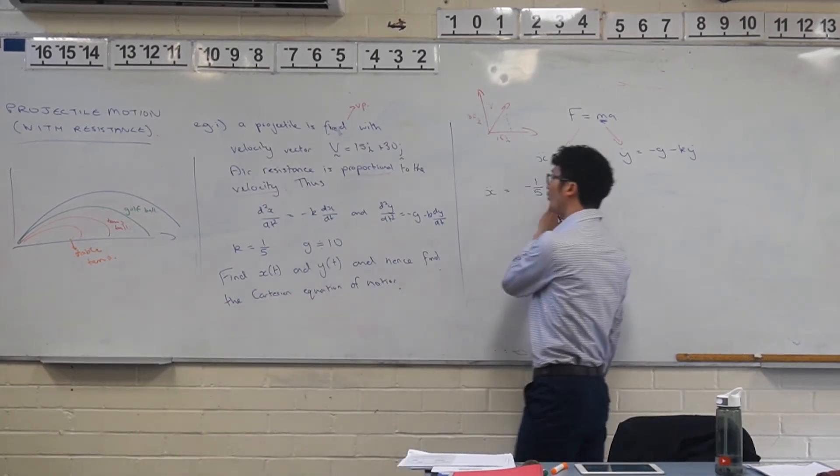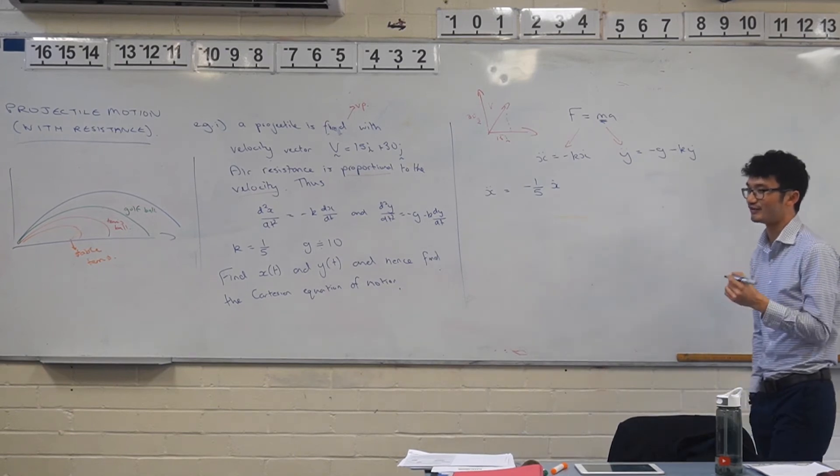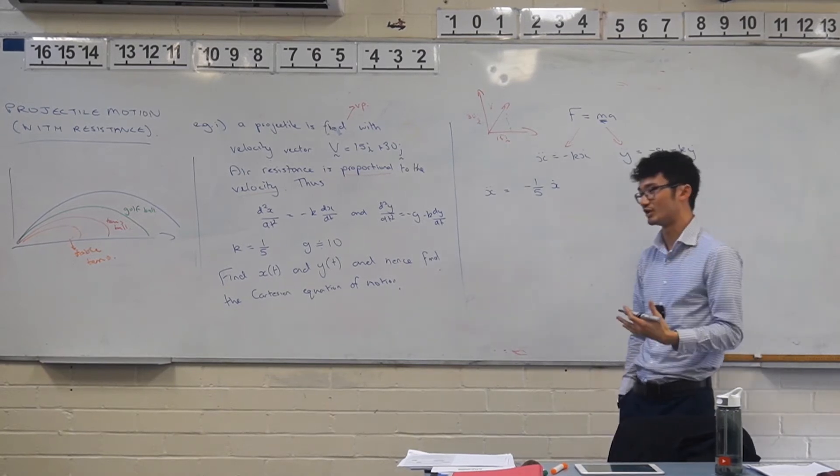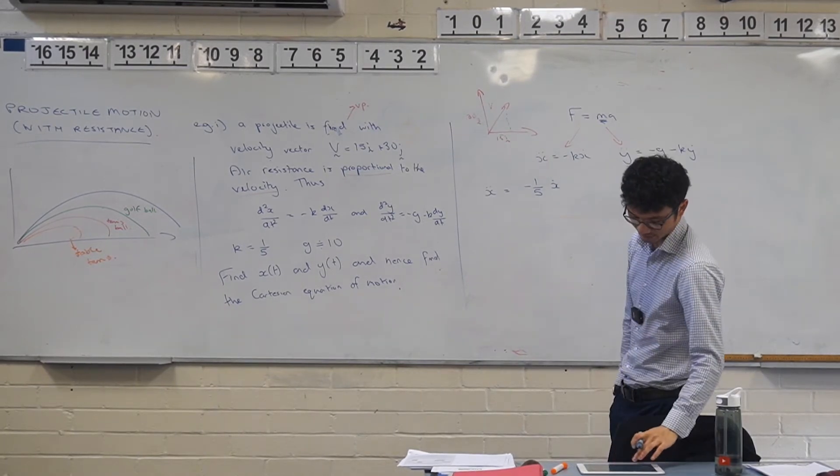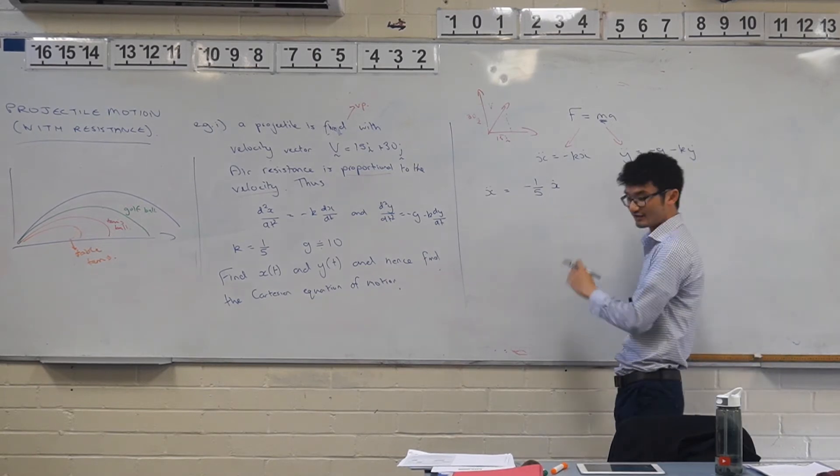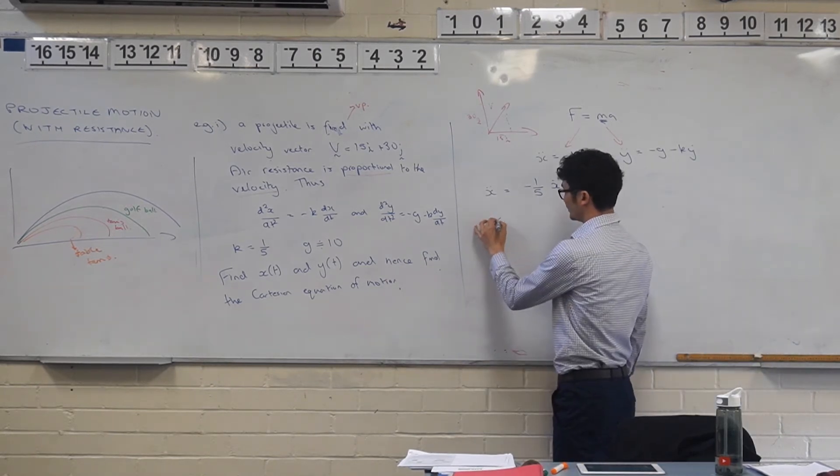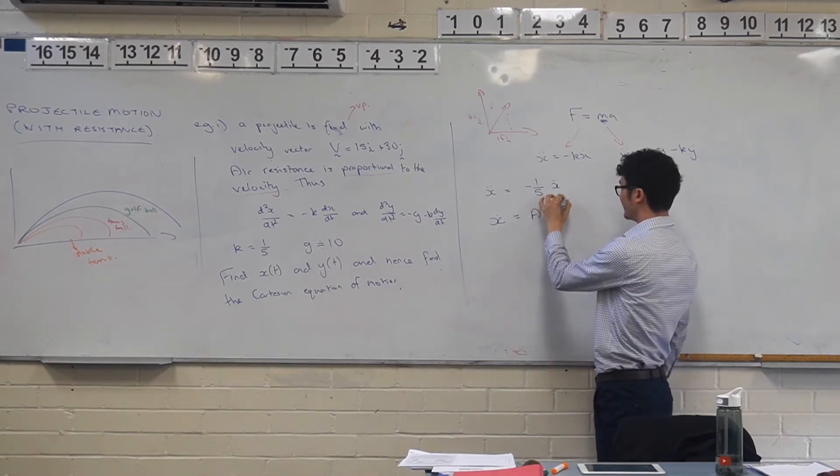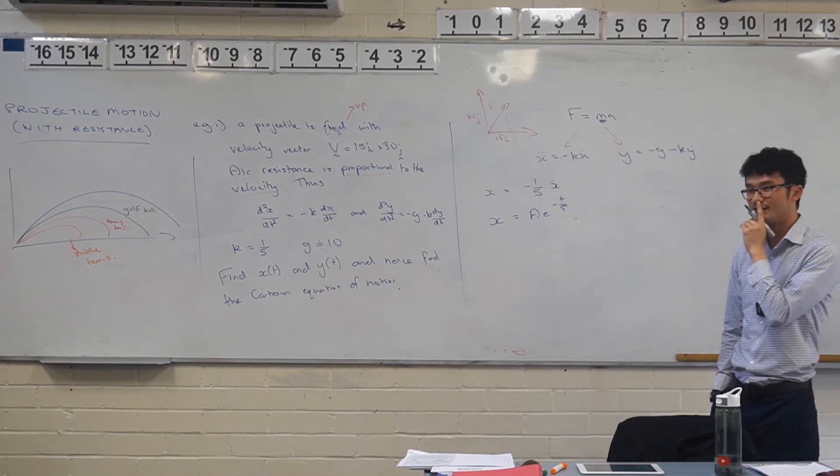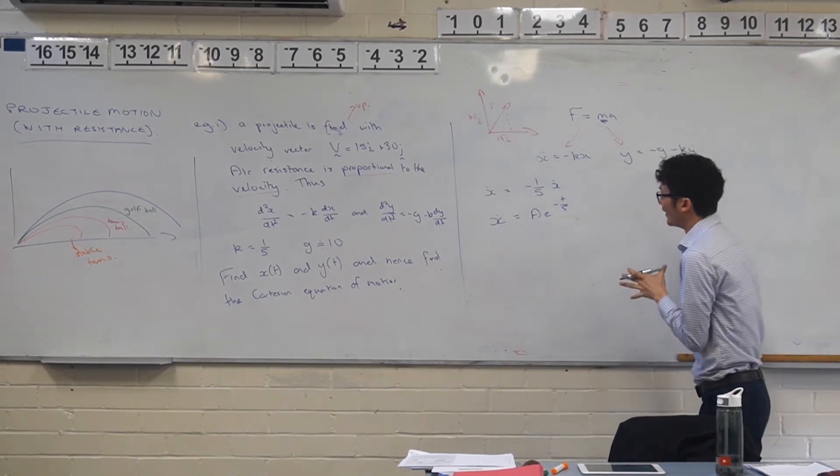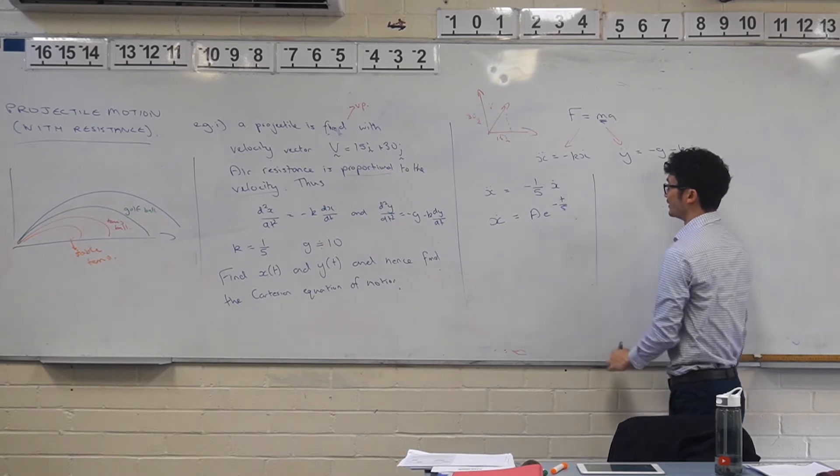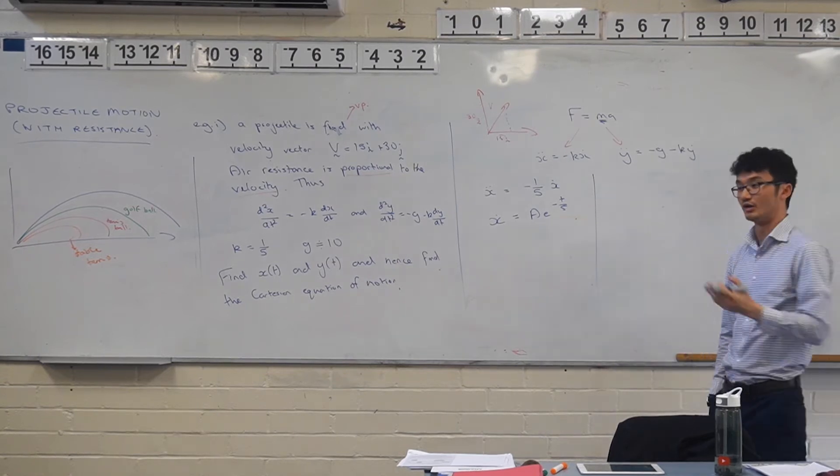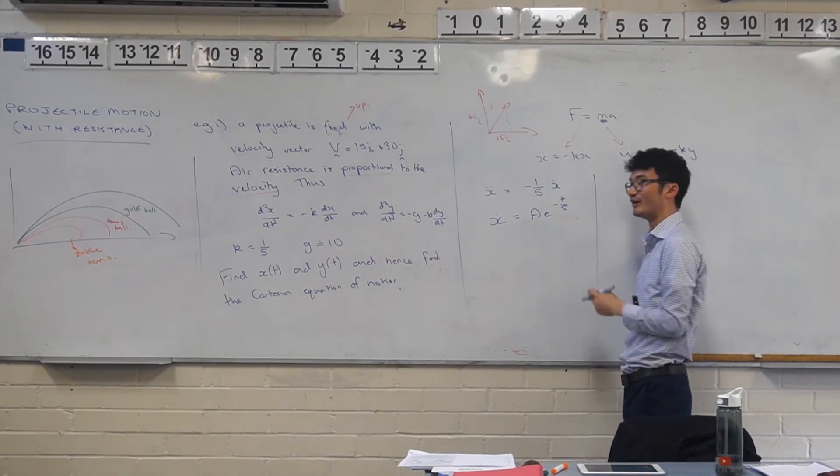What I want you to think about is that this expression here represents velocity, and this expression here represents acceleration. And so the relationship between these two is that this is a derivative of this variable here. What does that mean in terms of what kind of equation have we actually constructed here? These are called differential equations.